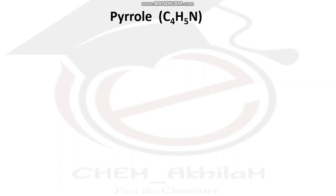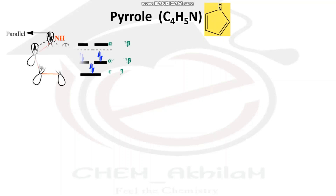Pyrrole is a compound having the molecular formula C4H5N. It has a ring system and is mainly found in many natural products like hemoglobin, chlorophyll, alkaloids, etc. Now we can see the molecular orbital picture of pyrrole.